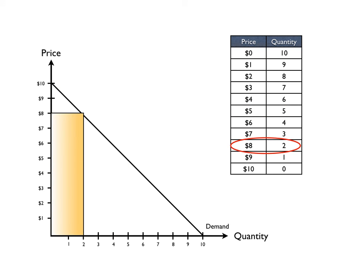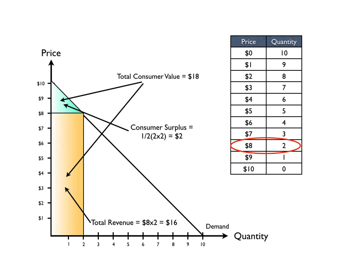We can look at another example here. With two units, the price is going to be $8. The total value is going to be $18. That's the area of the rectangle and the area of the triangle. The total revenue, the consumer had to pay $16. So what's left over is the $2 in surplus.